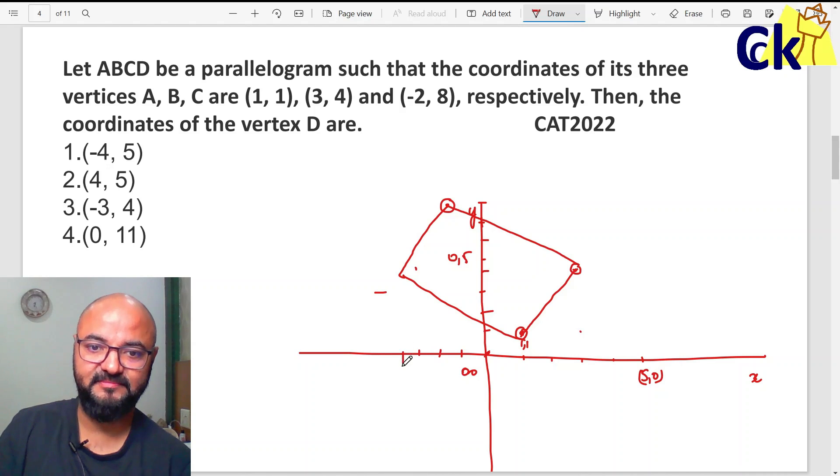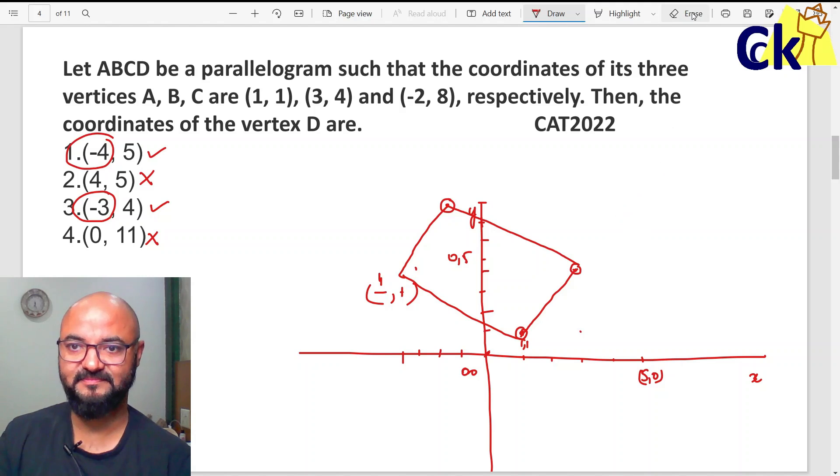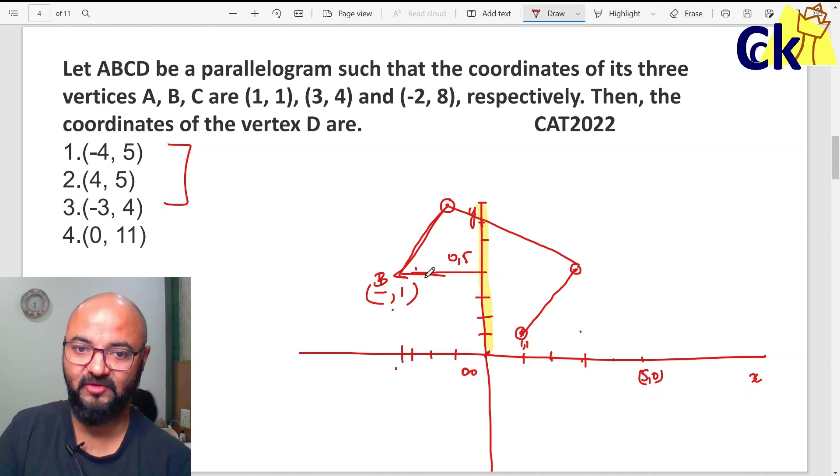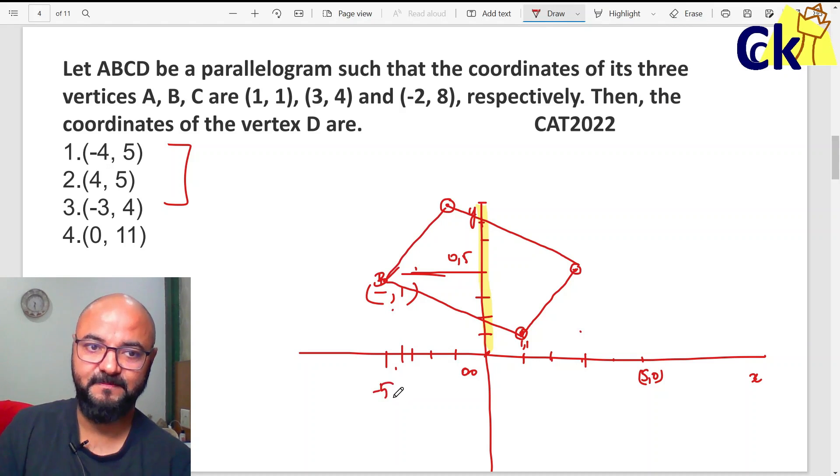Where X ka value is negative and Y ka value is some positive value. Minus 4 and 5, yes, ho sakta hai. 4 and 5 nahi sakta. Minus 3 and 4 bhi ho sakta hai. 0 and 1 nahi sakta. Because I need X ka value to be negative. Within 30 seconds, I am down to last two options. Are you with me on this? You can see that X ka value is coming out to be negative. Abhi negative 4 hai ke negative 5 hai. Y ka value 5 hai ke 4 hai, all I need to find. If this is drawn to scale, X come out to be minus 4 and Y come out to be 5. Answer is A.